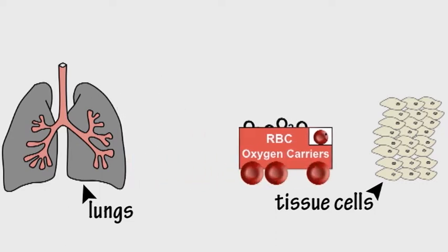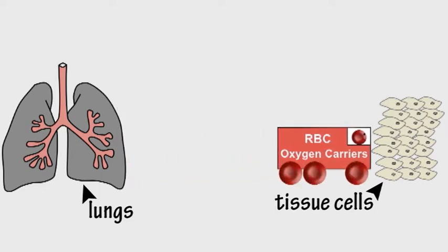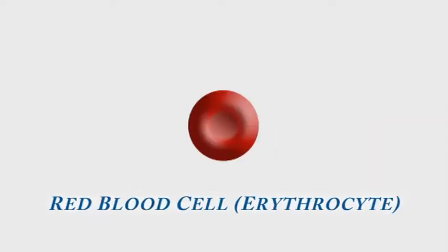The function of these red blood cells is to carry oxygen from the lungs to the tissues of the body. A red blood cell is shaped like a tiny disc with a dent at the center of each side.